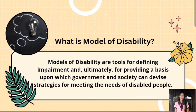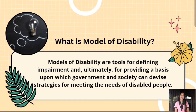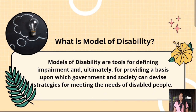Now, let us define first what a model of disability is. Models of disability are tools for defining impairment and ultimately for providing a basis upon which government and society can devise strategies for meeting the needs of disabled people. They are frequently regarded with skepticism since it is believed that they do not reflect the real world, are frequently incomplete and encourage restricted thinking, and rarely provide precise counsel for action. Yet, they provide a useful framework for understanding disability concerns as well as the perspectives of individuals who create and utilize the models.